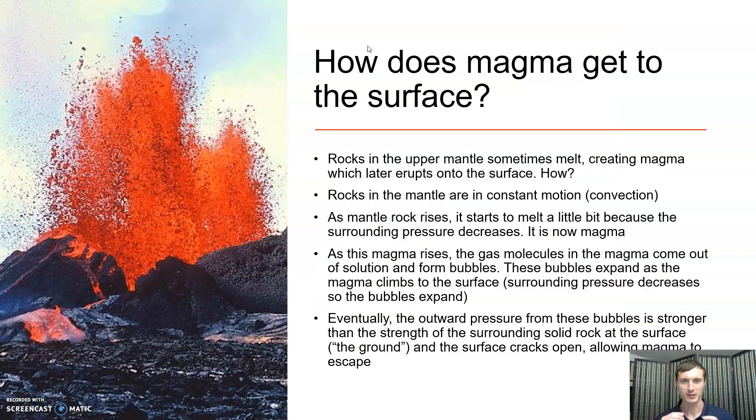So how does this magma go from the upper mantle all the way to the surface of the planet? Well, let's talk about the most common way that this happens. The mantle is in constant motion, we have convection cells, it's always moving, and part of it is going to be rising. As that mantle rock rises up, it stays at about the same temperature, but the pressure drops dramatically. And as the pressure drops, there is less force holding the molecules together, and so we go from a solid to a liquid state, it begins to melt.